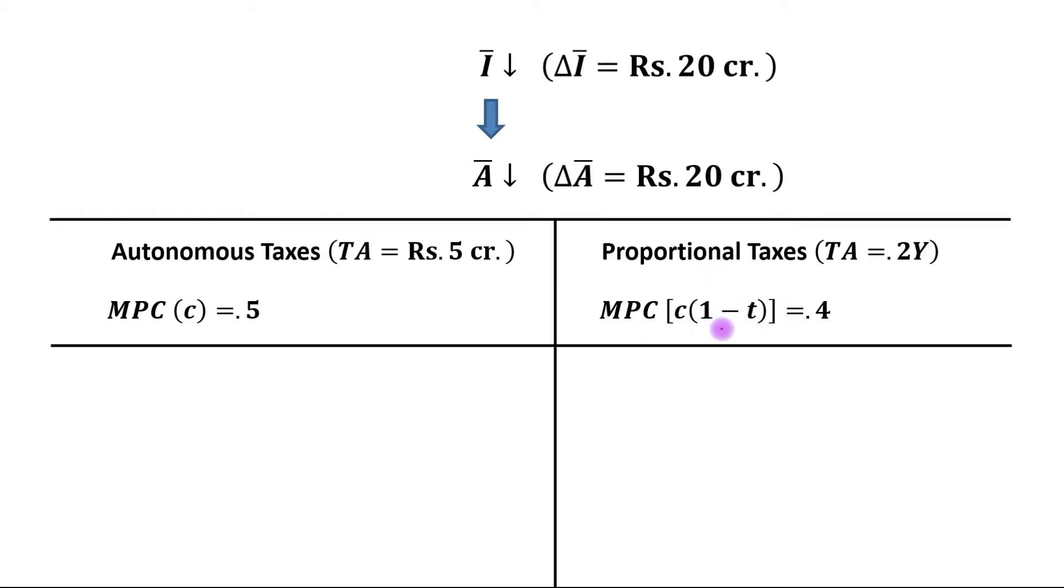I am showing here the calculation part. MPC out of income in case of proportional taxes: 0.5, this is MPC out of disposable income, times 1 minus tax rate. Tax rate is 0.2, so 0.5 multiply by 0.8, and this is 0.4. So this is MPC out of income in case of proportional taxes.